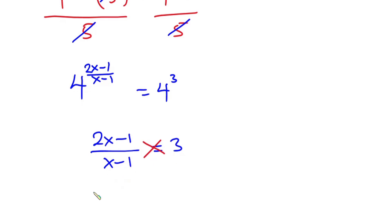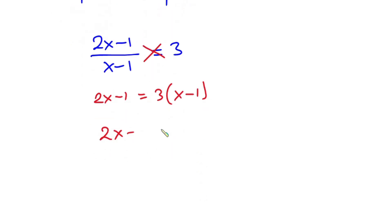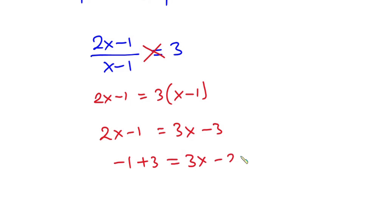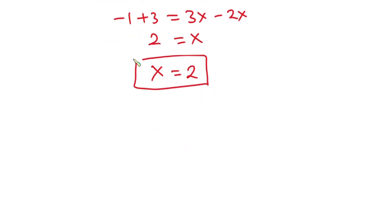Now let's go ahead and cross multiply. So we have 2x minus 1 is equal to 3 times (x minus 1). Simplifying this, we have 2x minus 1 is equal to 3x minus 3. Now let's move the terms with the variable to the right hand side. So we have negative 1 plus 3 is equal to 3x minus 2x. That gives us 2 equals x. So x is equal to 2 — this is our answer.